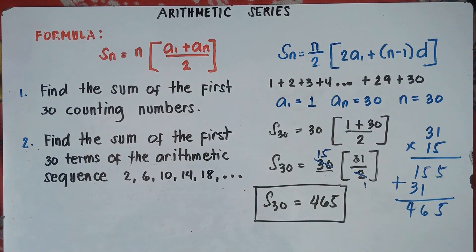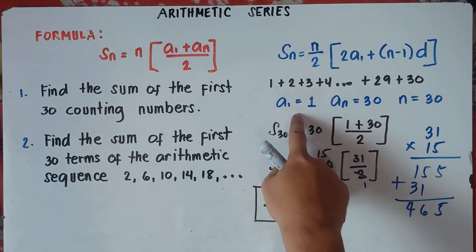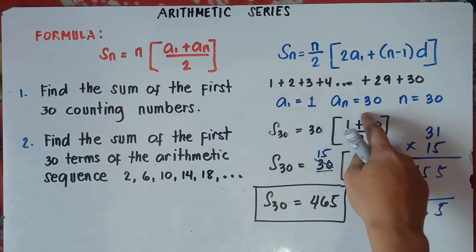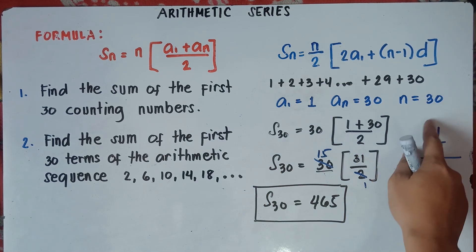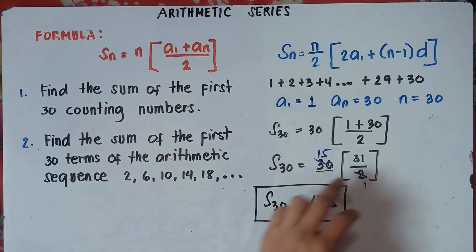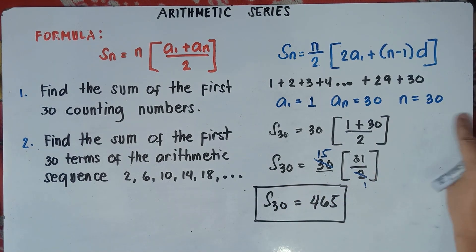Alright, so that's how you answer number 1. Very easy, right? If you have the first term, if you have the last term, and of course you have N — the number of terms — you can simply use this formula and you will get the answer.